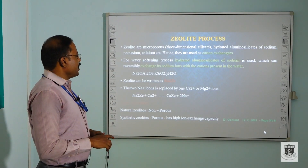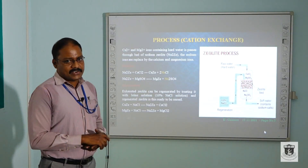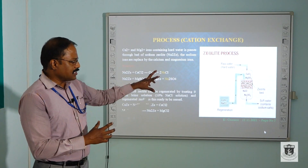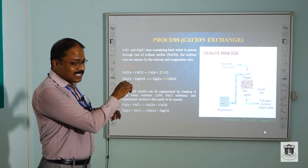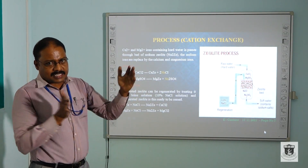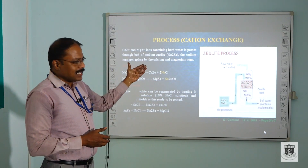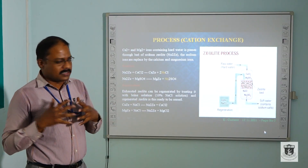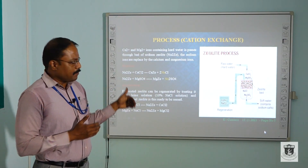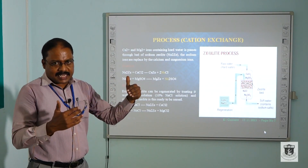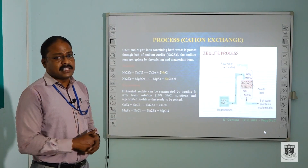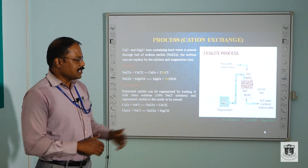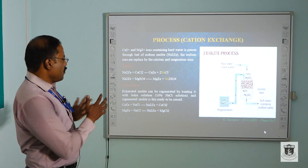Now we look at the process — the schematic diagram of the zeolite process. We have a cylinder with a bed containing Na₂Ze, the sodium zeolite. We pass the raw hard water, which contains calcium and magnesium ions, through this bed. The cation exchange bed replaces the cations from the hard water. Finally, you get sodium replacement ions — sodium chloride, sodium sulphate — and the soft water containing sodium salts comes out below.